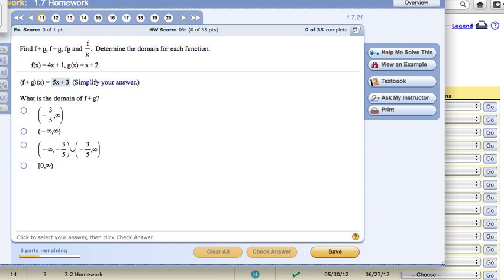Notice that our answer was 5x plus 3. As long as you don't have a variable inside of a radical or in the denominator, then your domain is always going to be all real numbers, and all real numbers are written like this: negative infinity to positive infinity. That means you can plug in whatever you want and you'll get the correct answer.